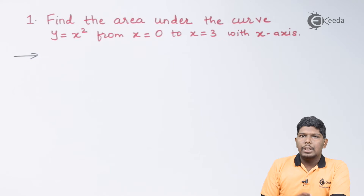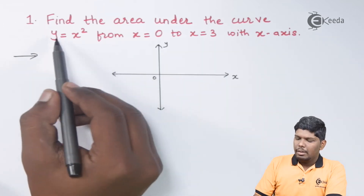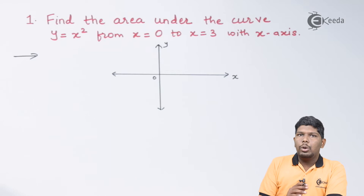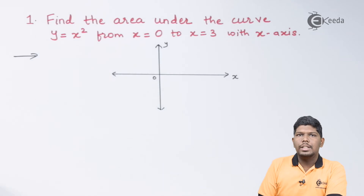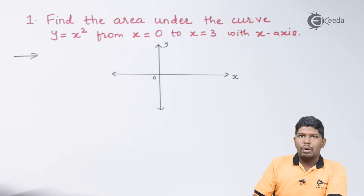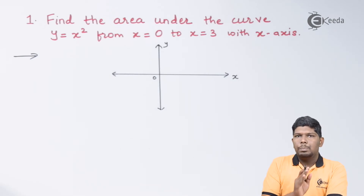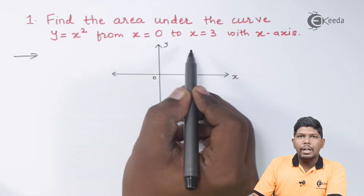The given curve y = x² represents a parabola, since one term is linear and the other is quadratic. To draw the graph of the parabola, check which variable has the minimum power: the power of y is 1 and the power of x is 2, so the minimum power is with y. Also check the sign of y — since y is positive, we draw the parabola in the positive direction of the y-axis.